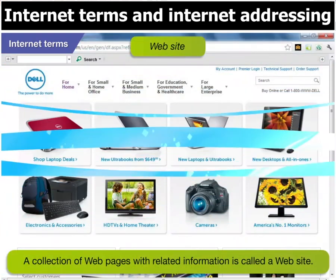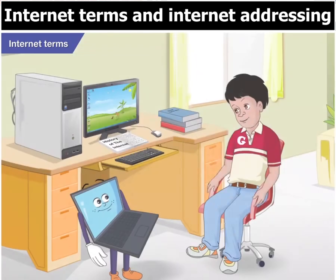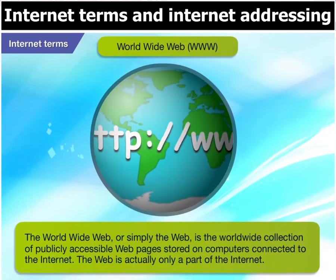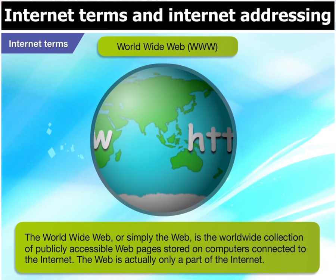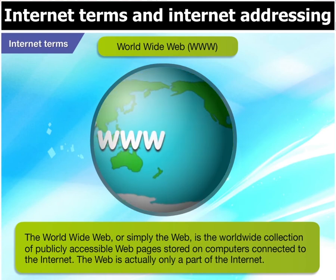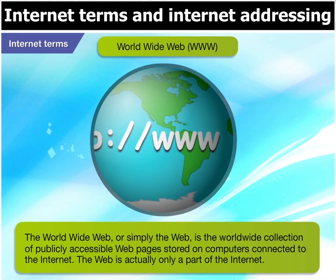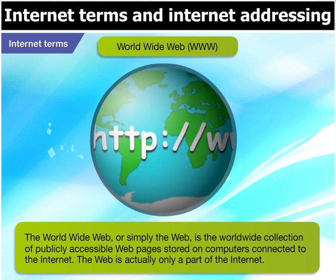A collection of web pages with related information is called a website. The World Wide Web, or simply the web, is a worldwide collection of web pages stored on computers connected to the internet which anyone can access. This has helped to popularize the internet. The web is actually only a part of the internet.